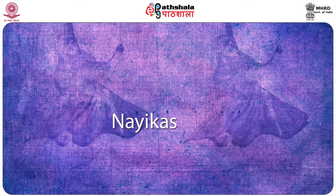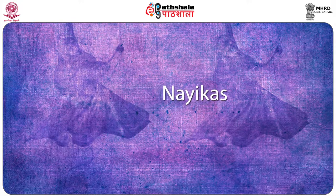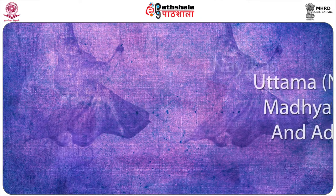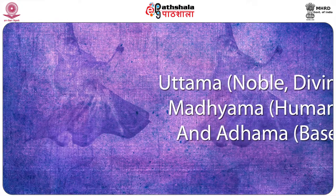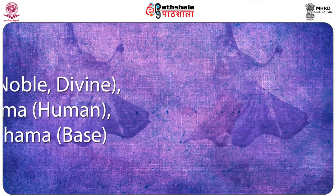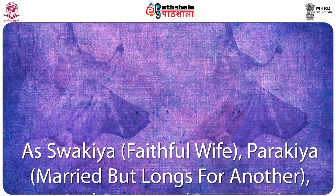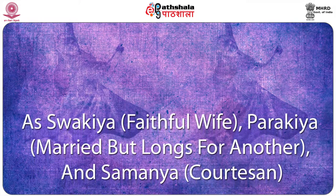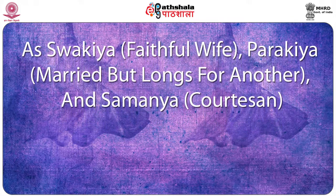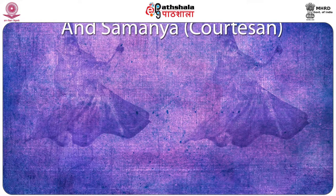Characters may also be classified according to their stature as Utama (Noble/Divine), Madhyama (Human) and Adhama (Base), as well as according to their moral disposition as Svakkya (Faithful wife), Parakkya (Married but longs for another), and Samanya (a courtesan).